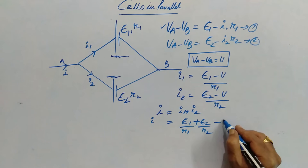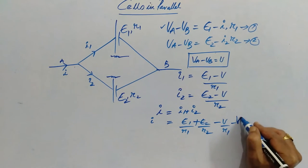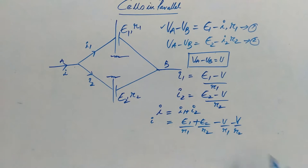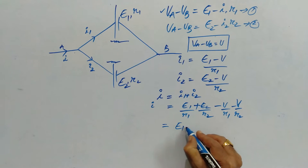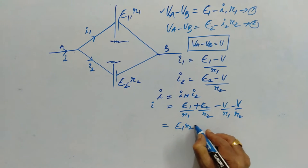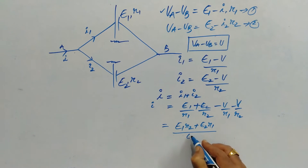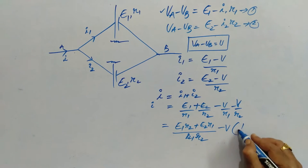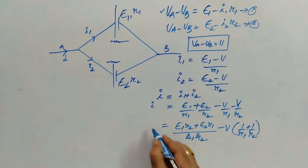I can be written as E1 by R1 and E2 by R2 minus V by R1 minus V by R2. Or, I can write E1 by R2 plus E2 by R1 by R2 and this is 1 by R1 plus 1 by R2.